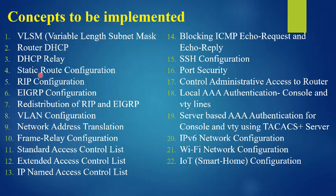The fourth concept is static route configuration — between two networks we are going to configure a static route. The fifth concept is RIP — Routing Information Protocol. The sixth concept is EIGRP, also a routing protocol we are going to configure. The seventh concept is redistribution, because we are using two different routing protocols — RIP and EIGRP — so we have to configure redistribution between them.